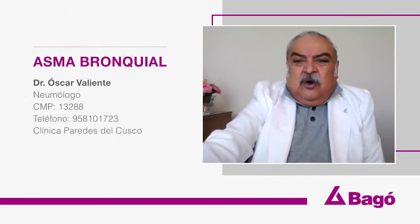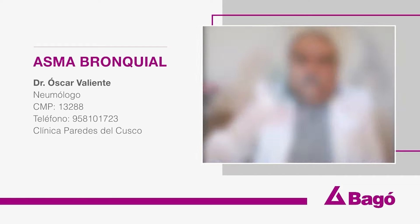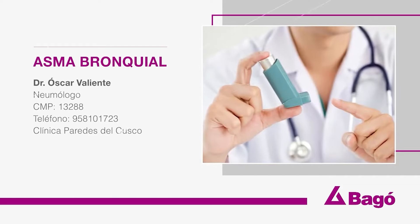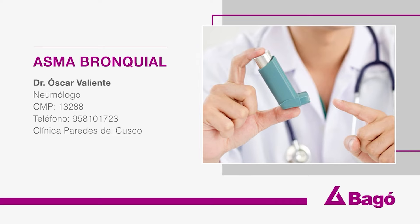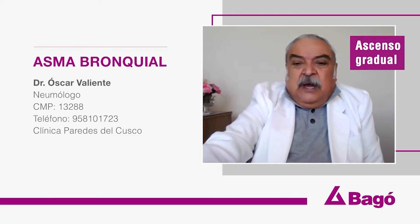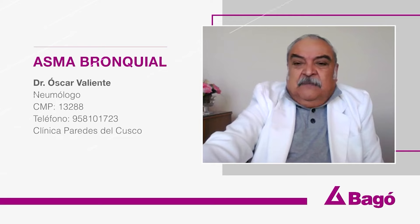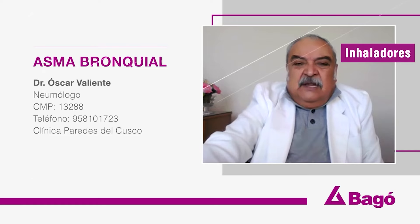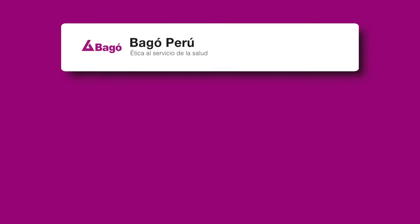Primero, lo que hay que hacer es controlar el problema asmático. Lo que tiene que hacer es el uso de algún medicamento. Segundo, el ascenso debería de ser en forma gradual, que no suba violentamente. Y si lo va a hacer porque es necesario, tiene que utilizar sus inhaladores. En estos casos, el paciente tiene y debe de utilizar sus fármacos broncodilatadores.